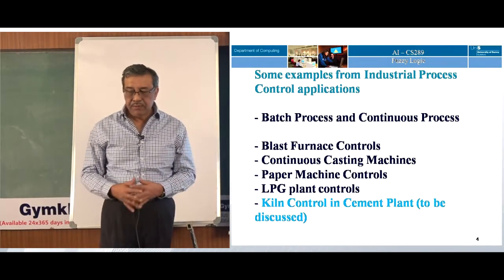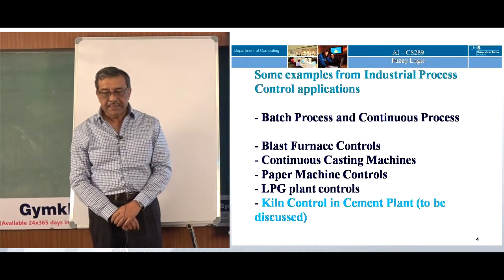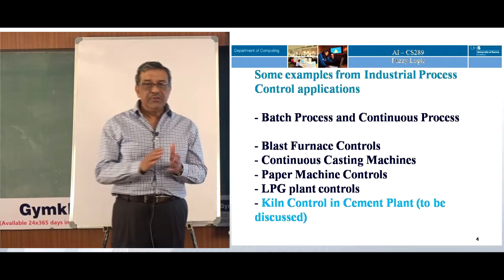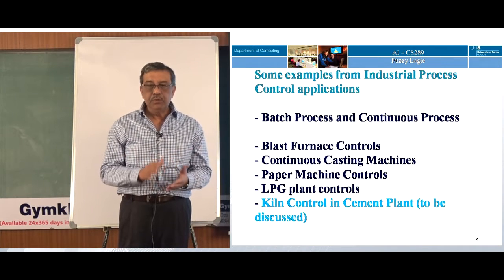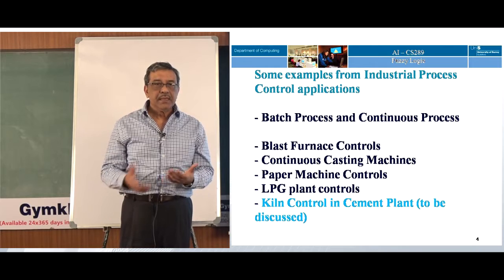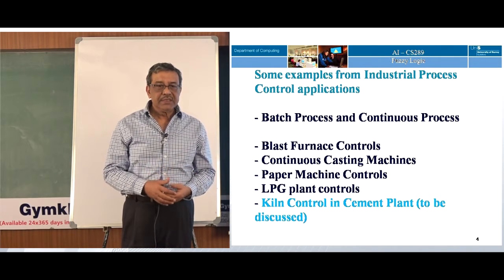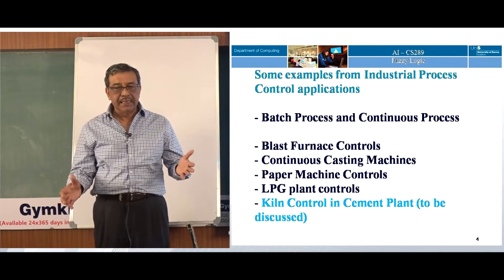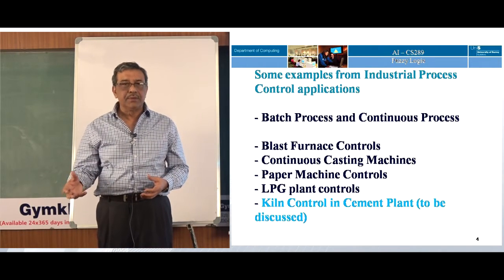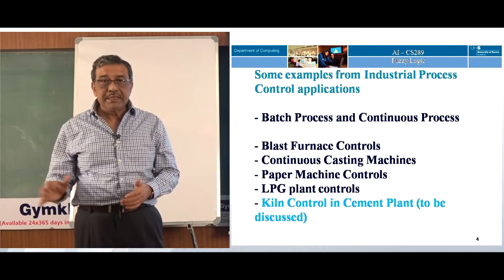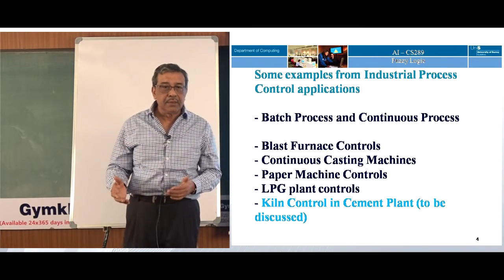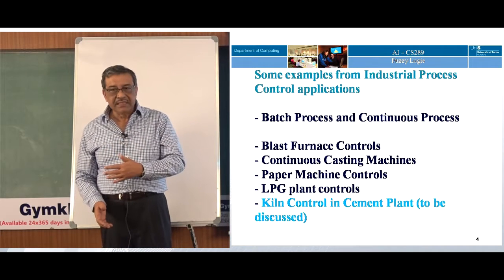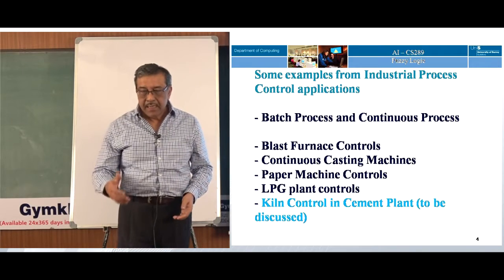Just to tell you some examples of industrial processes and control of industrial processes — we first define processes into batch process and continuous process. A batch process is something where you start the process and stop it, maybe after one hour, and the output is taken out. In a continuous process, the process is running day in and day out — 24/7, 365 days a year. The process is continuous.